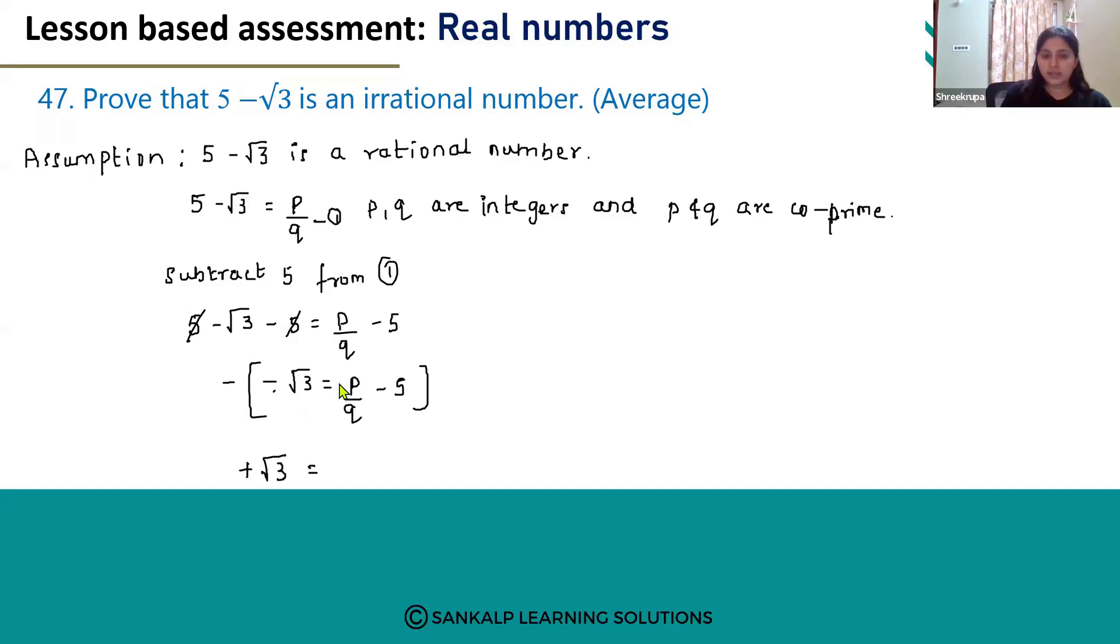Here plus is there. We have not mentioned any sign. It clearly indicates a plus is there. Plus into minus will become minus, minus p by q. Minus into minus will become plus 5. This is the equation we get.